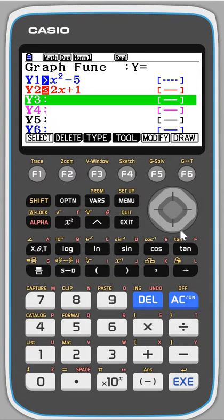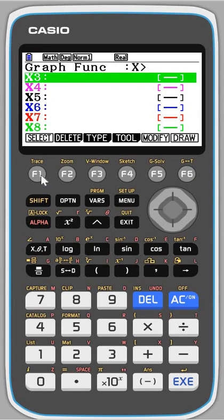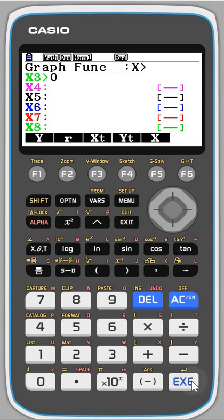I'm going to go down and now I want to do x is greater than 0. So I'm going to start by pressing type this time. I'm going to press f6 until I can see x is greater than. So there it is. So I'm going to do x is greater than 0. So execute.